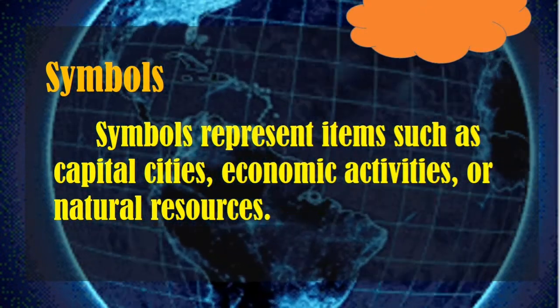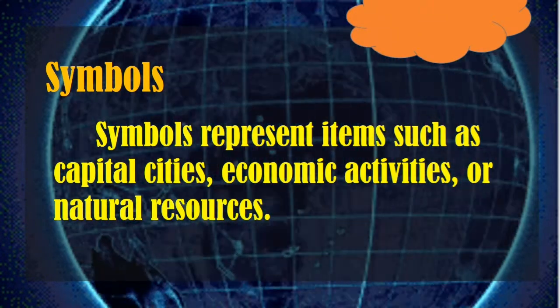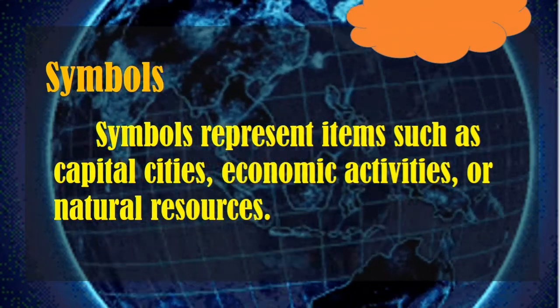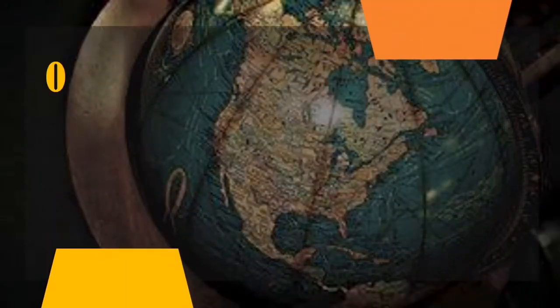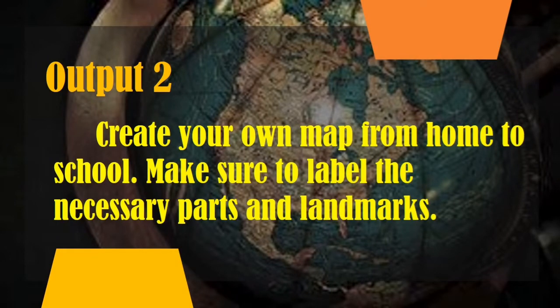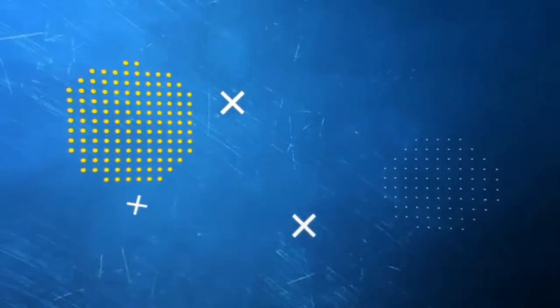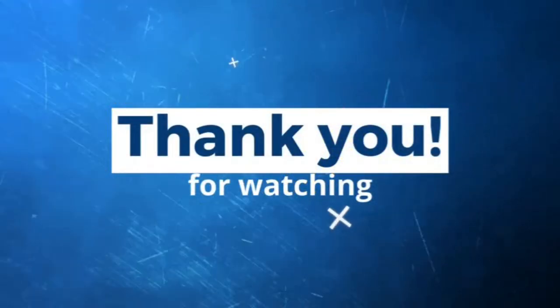So those are the seven parts of the map. If you have questions, you can post them in Google Classroom or ask during our Google Meet. For your activity for this lesson, create your own map from home to school. Make sure to label the necessary parts and landmarks. That would be all for today class. Thank you for listening.